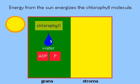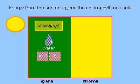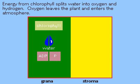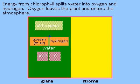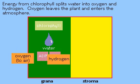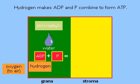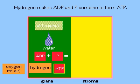When sunlight lands on the leaves, the light absorbed by the chlorophyll leads to the creation of high energy molecules in the stroma. These molecules split water into its elements of hydrogen and oxygen, releasing oxygen into the air. The hydrogen makes ADP and phosphate combine to form ATP.